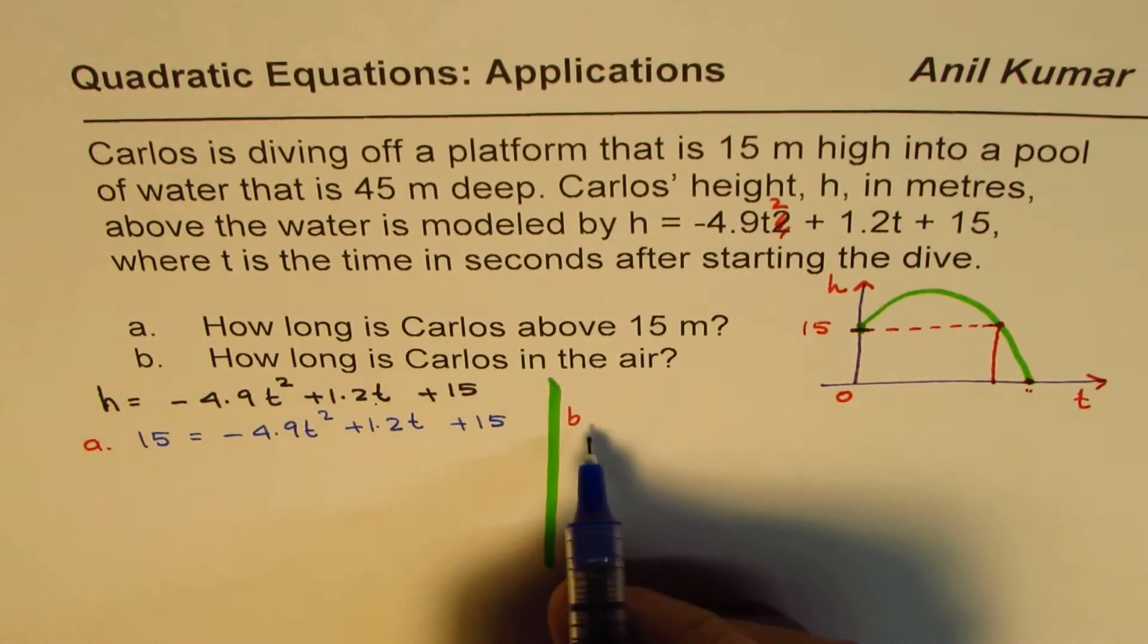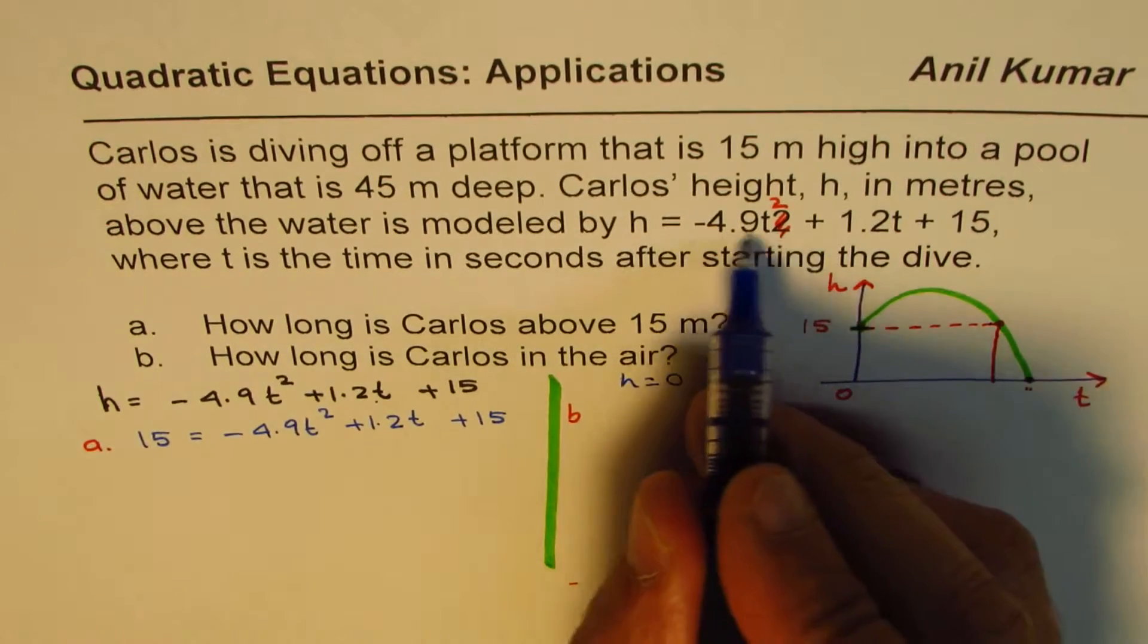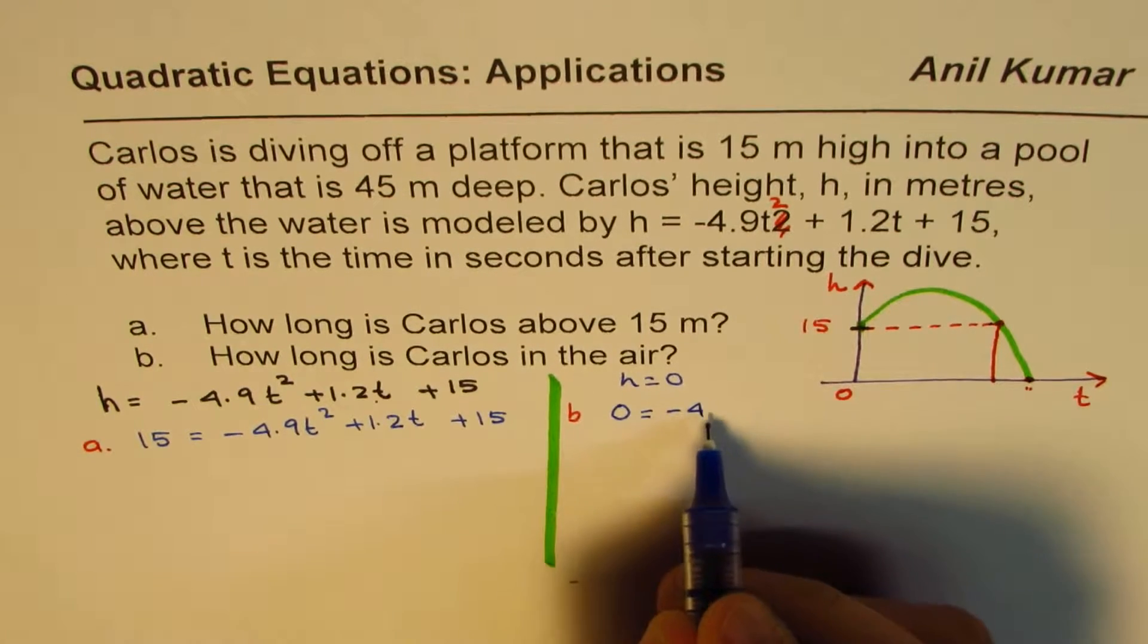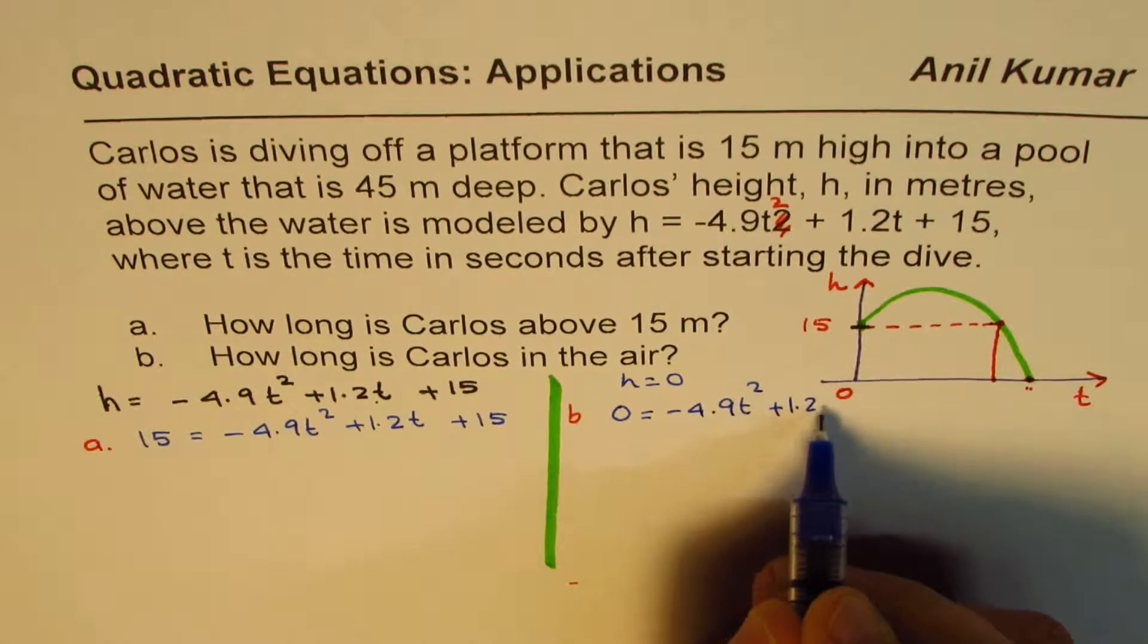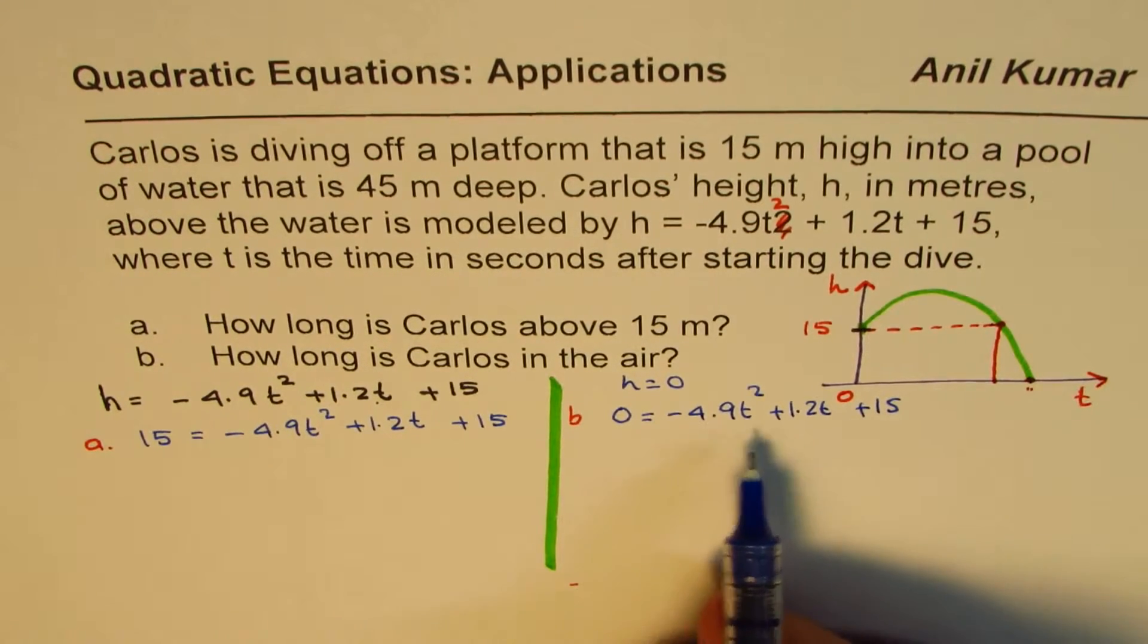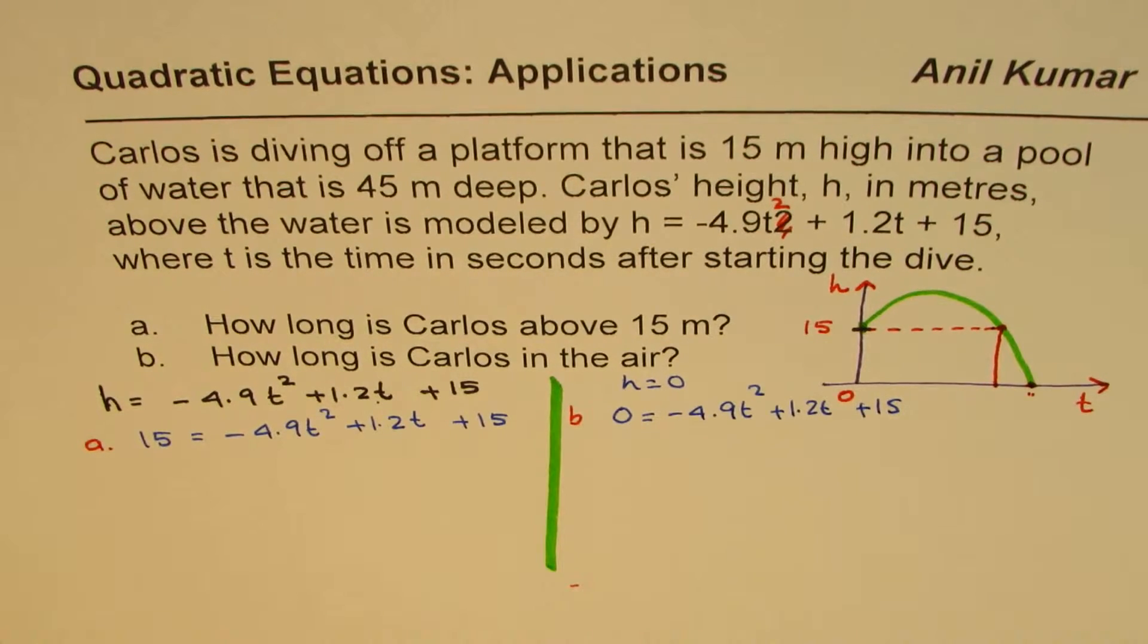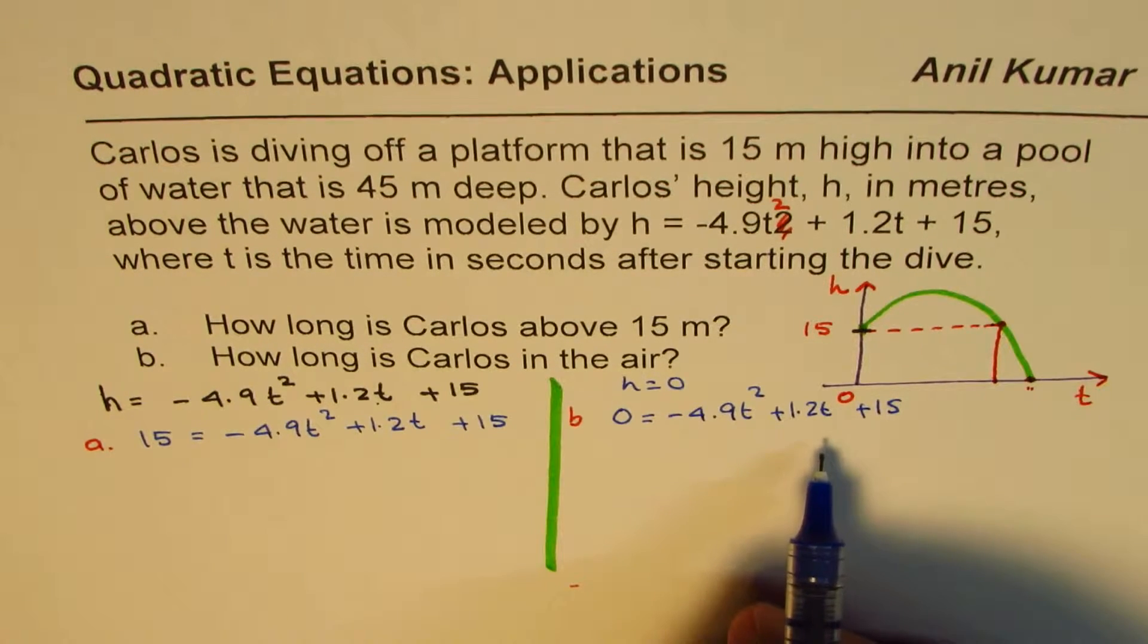At this point, what is the height? Height is 0. So now replace height h equals 0 in the given equation. So we have 0 equals minus 4.9t squared plus 1.2t plus 15. These are the two equations to solve. You can pause the video, answer the question, and then look into my suggestion.